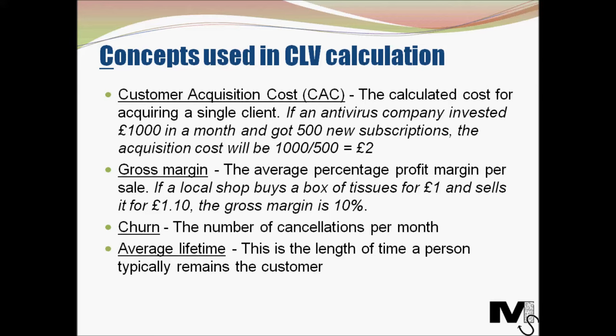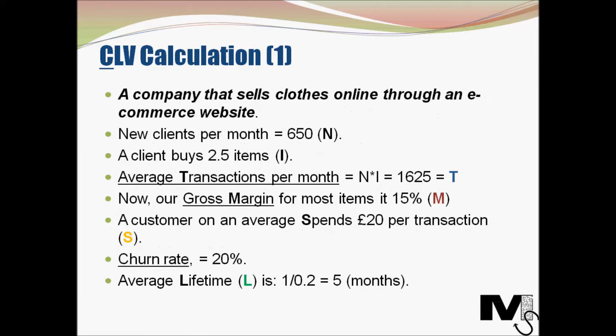Churn is a very popular business term. It is essentially the number of cancellations per month — the number of people who stop buying from you or change to a different provider for one reason or another. These are the people who drop off and are no longer your customers. Average lifetime is the length of time a person typically remains a customer of the business. These are important concepts used in CLV calculation.